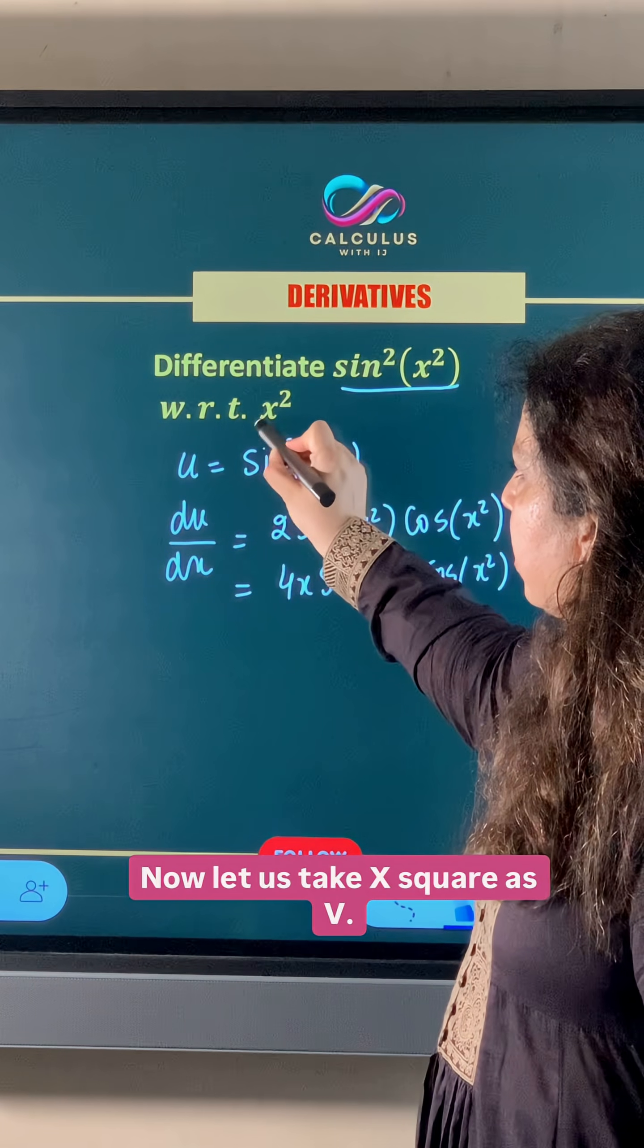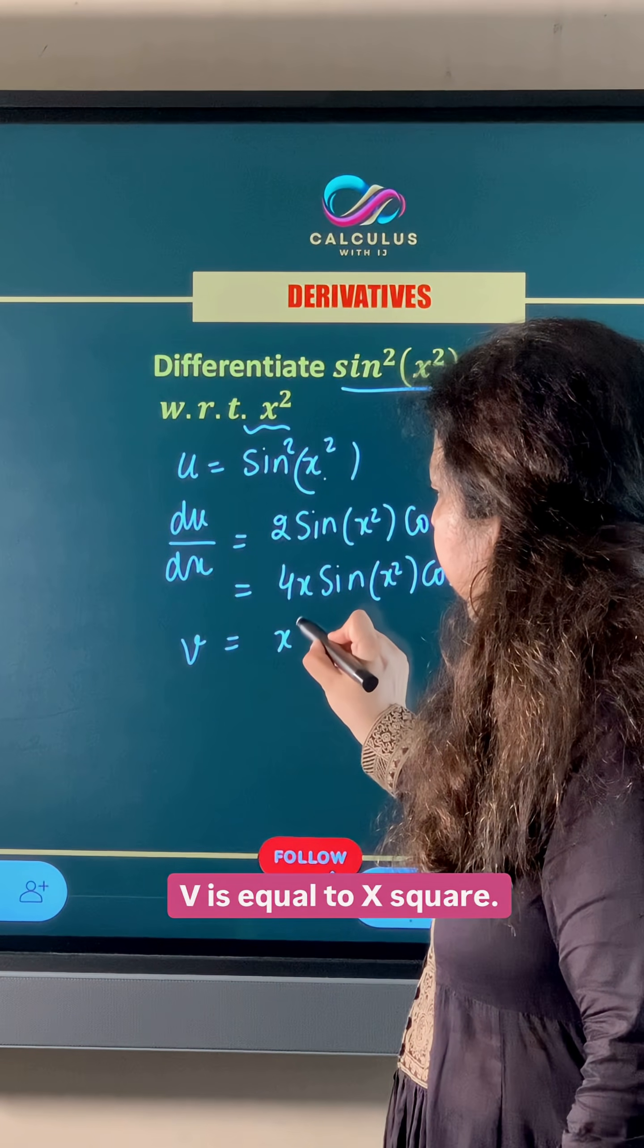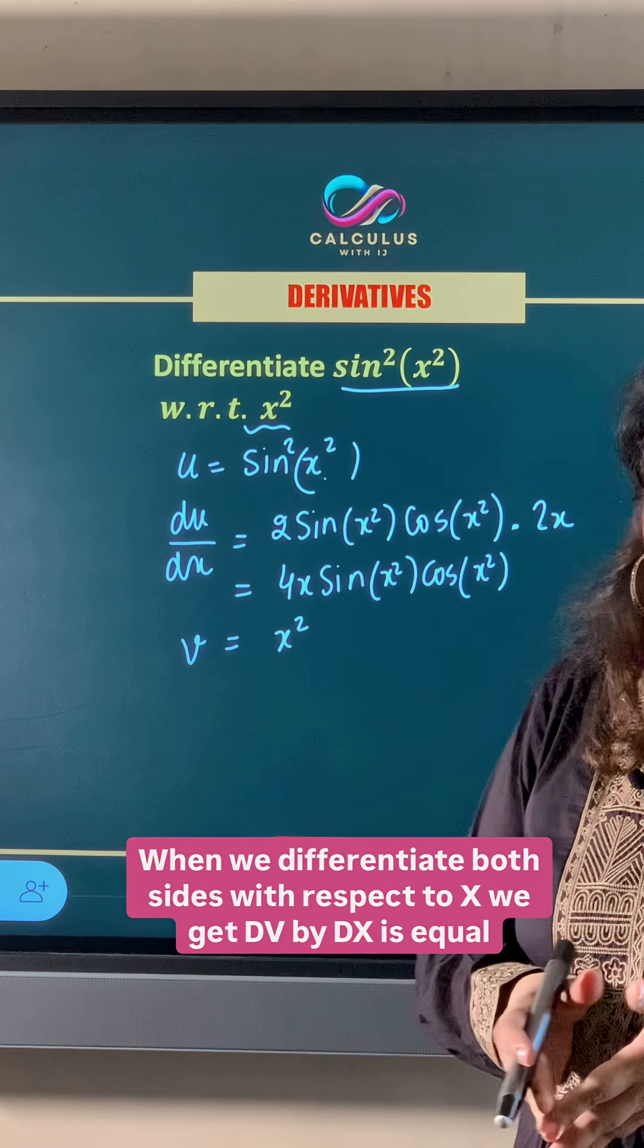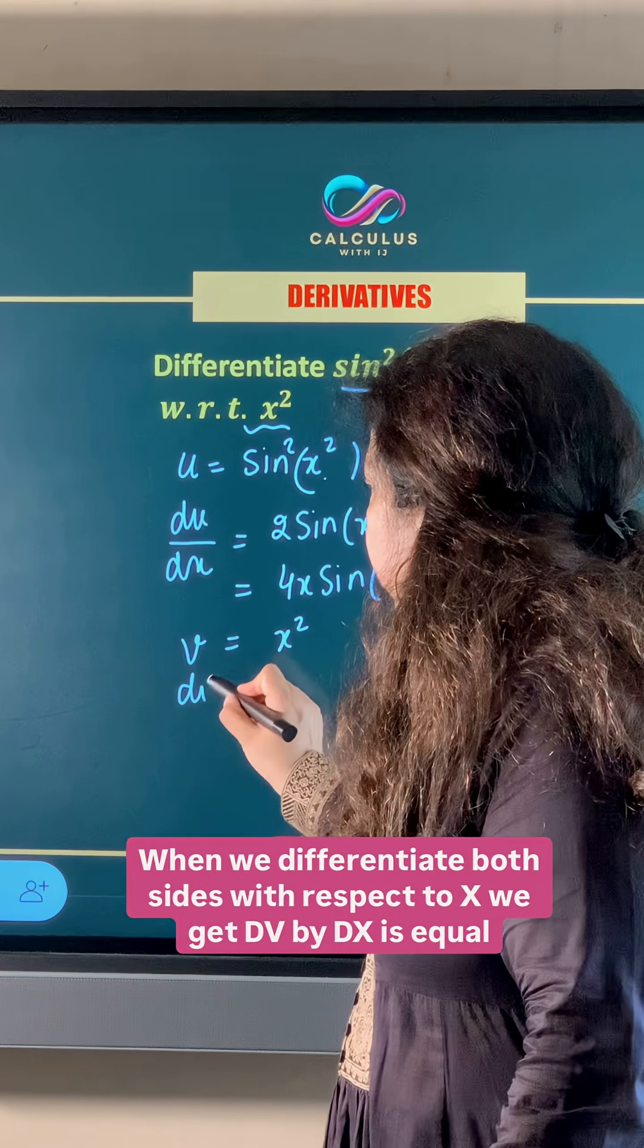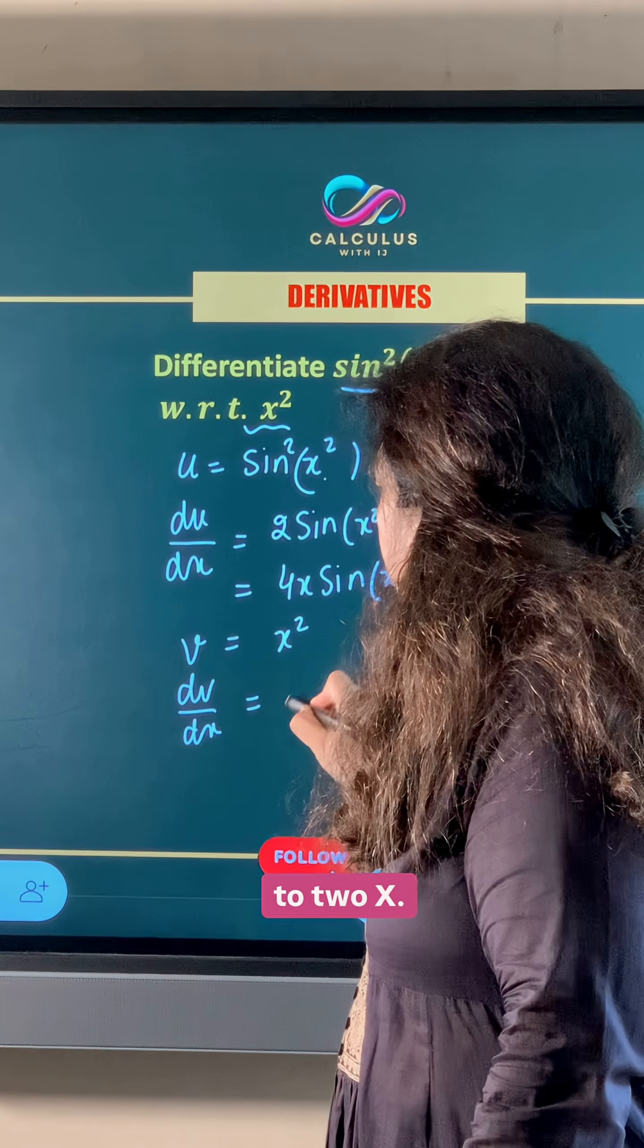Now let us take x² as v. So v = x². When we differentiate both sides with respect to x, we get dv/dx = 2x.